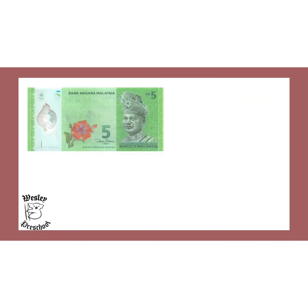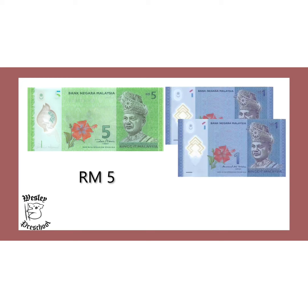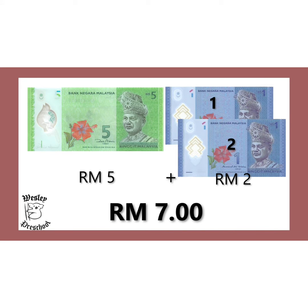Let's try another one. This is 5 ringgit. This is 1, 2 — 2 ringgit. So, how much is the total of this money? Let's count: 5 plus 2 equals 7. Yes, correct! So, here are 7 ringgit.